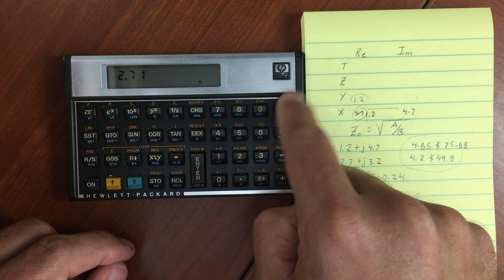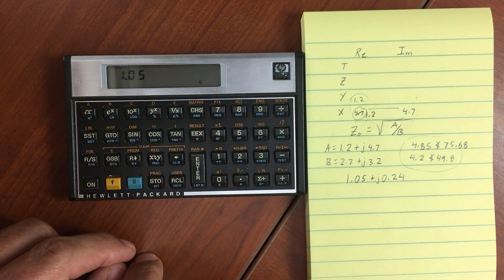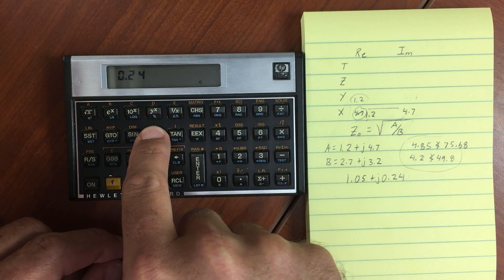So let's divide those. Take the square root. And our answer is 1.05 plus j.24.